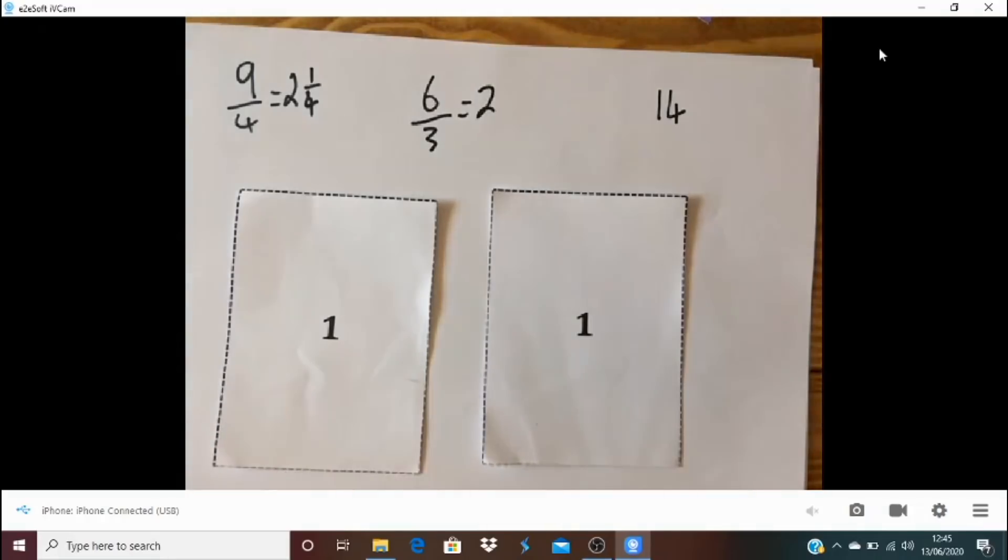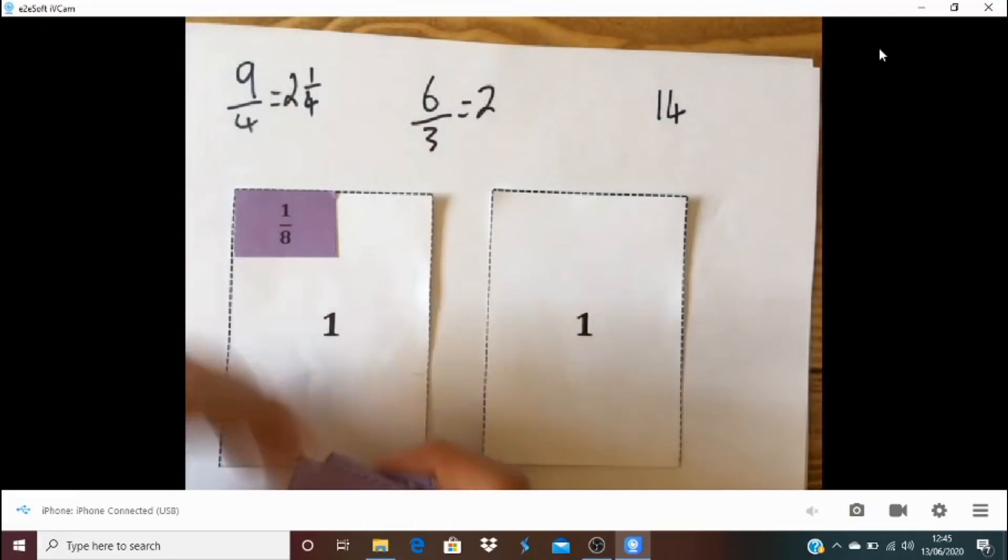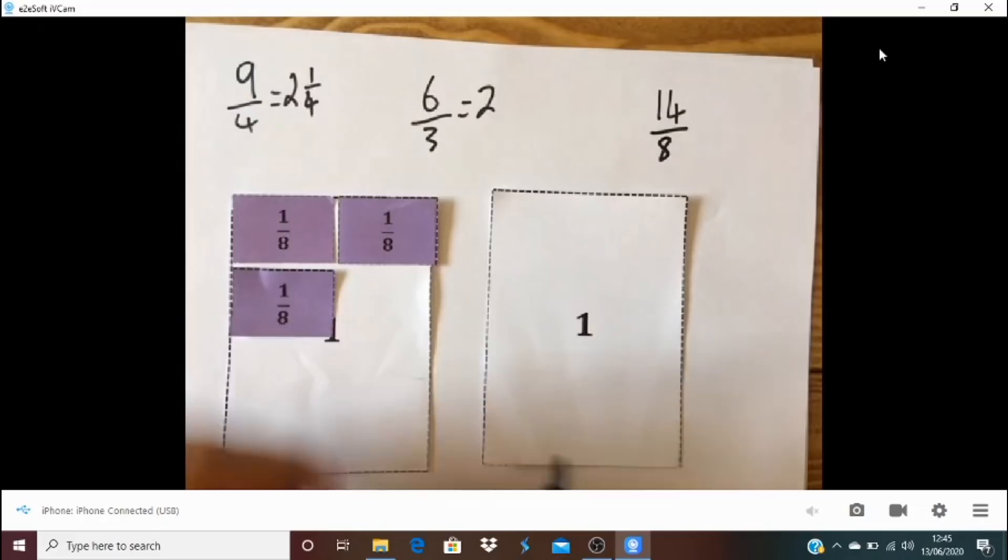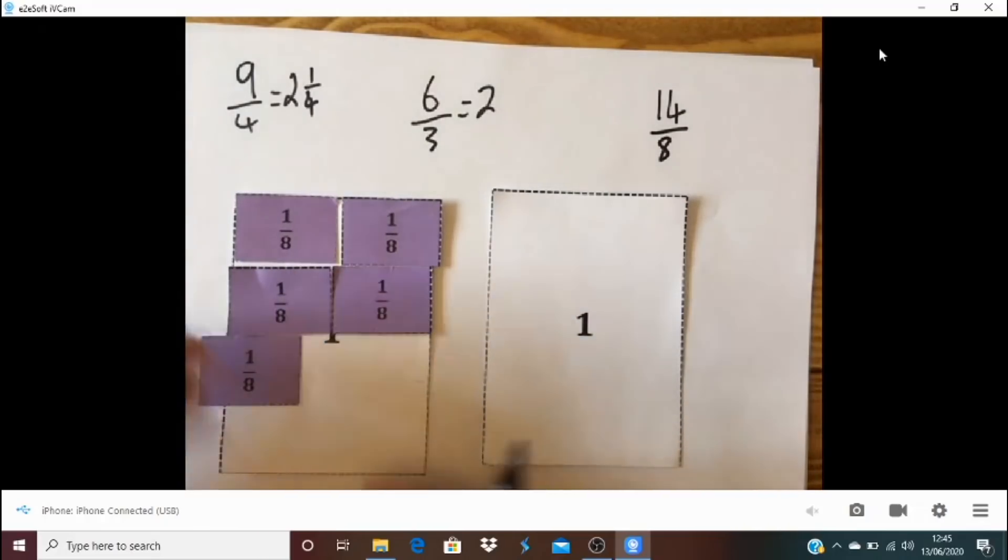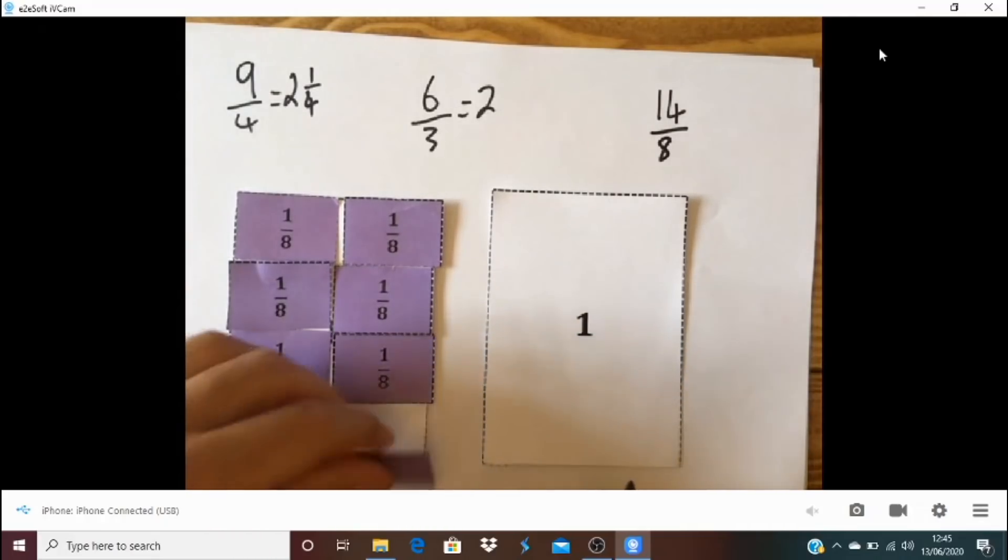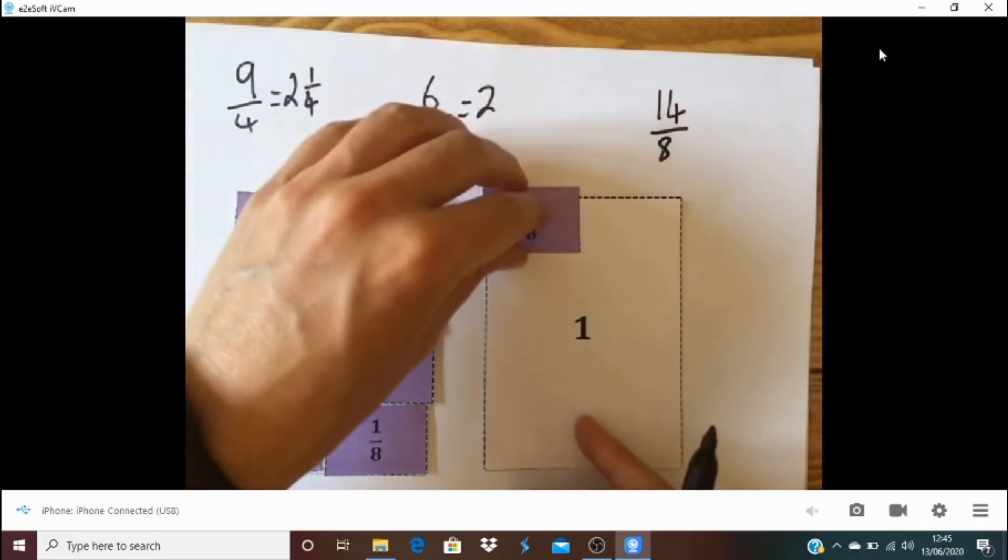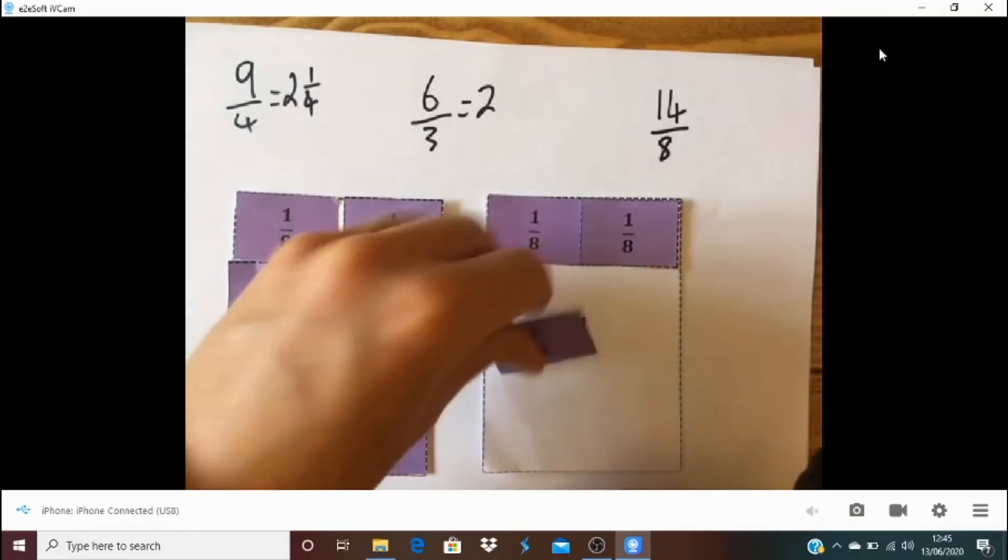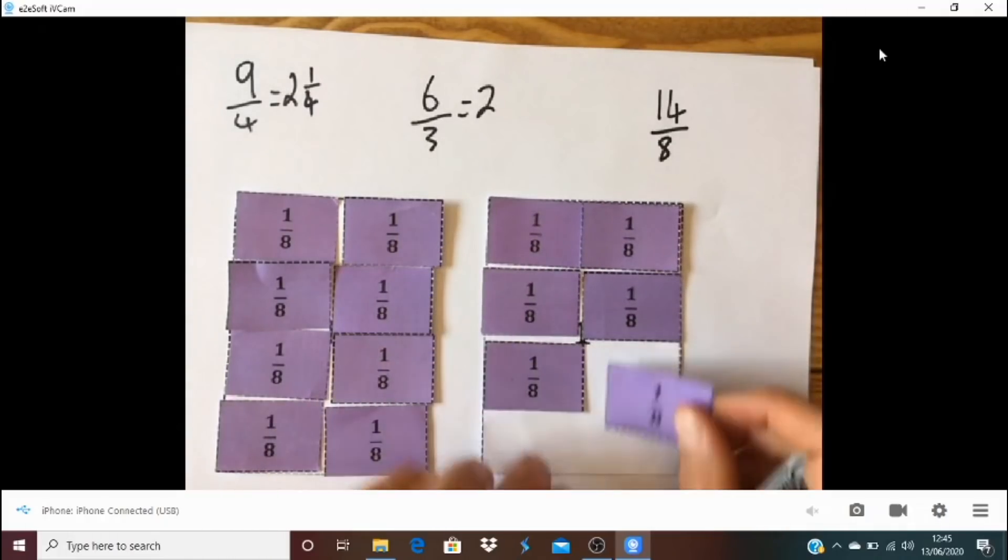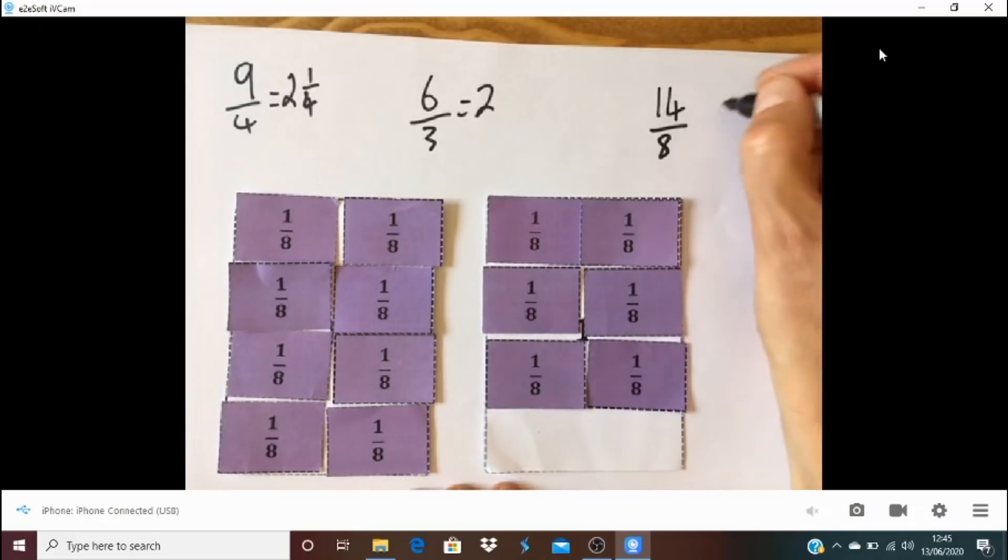And then what about my 14 eighths? Now maybe you thought this will be the most because there's 14 of them, which is the most, if you like. So let's have a look. So here it is, of course, it was 14 eighths. And let's have a look. Yes, that's 2 eighths, 3 eighths. Well, you know there's going to be 8 eighths on this one. I'll try and line them up as precisely as I can without spending ages. There we go. So that's 8, 9, 10, 11, 12, 13, 14 eighths.